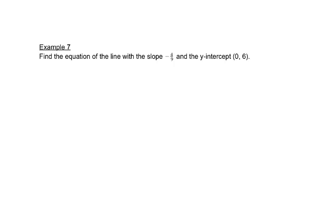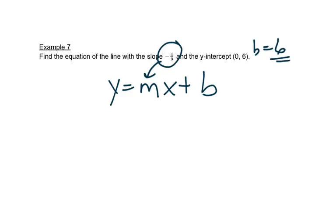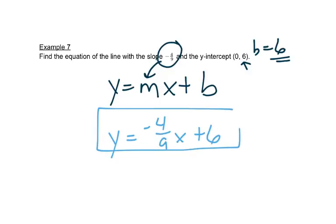This time it wants us to write an equation. Remember we have y equals mx plus b. It tells me my slope, so that's going to go in place of m. It tells me my y-intercept is 0, 6. That means that b is 6, the y value. So I just write y equals negative 4 ninths x plus 6. That's my equation.